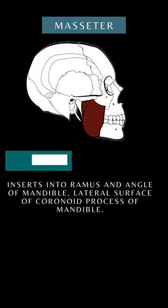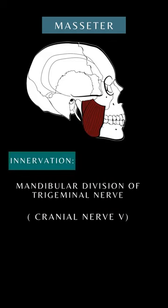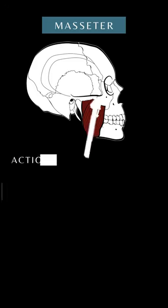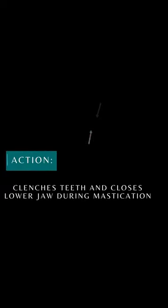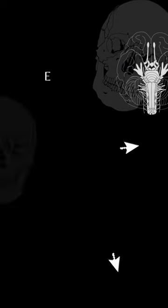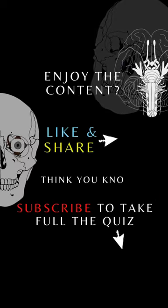The masseter is innervated by the mandibular division of the trigeminal nerve. It clenches the teeth and closes the lower jaw during mastication.